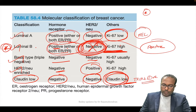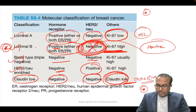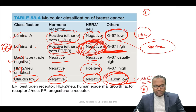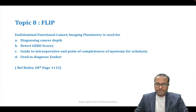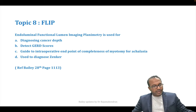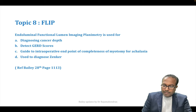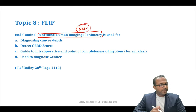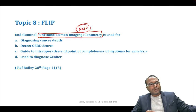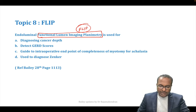This new molecular classification table is a new concept in Bailey and Love — questions can come from this. Coming to the most important GIT updates: endoluminal functional luminal imaging planimetry — known as FLIP — is a new investigation added in Bailey and Love. FLIP is done during surgery, especially for achalasia cardia, as a guide to the intraoperative endpoint of completeness of myotomy.